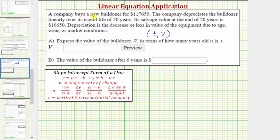the new bulldozer costs $117,650, which means that at time T equals zero, this is the value, and therefore the ordered pair is zero comma 117,650.